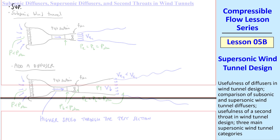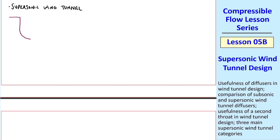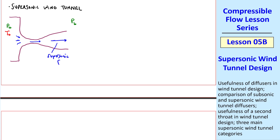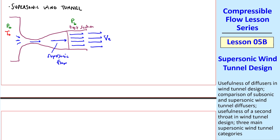Can we do a similar thing for a supersonic wind tunnel? Let's consider a blow-down type of wind tunnel, where you have a converging-diverging duct with stagnation pressure and stagnation temperature upstream. With backpressure P_b low enough, we get supersonic flow in the test section — say at Mach 2. If we just exhaust the air from this test section into the outside air, you have some exit speed V_E that is huge — in fact supersonic — and you would waste a lot of kinetic energy.